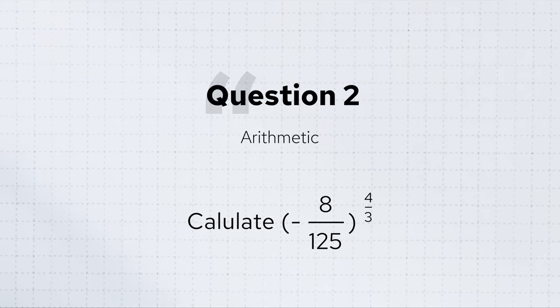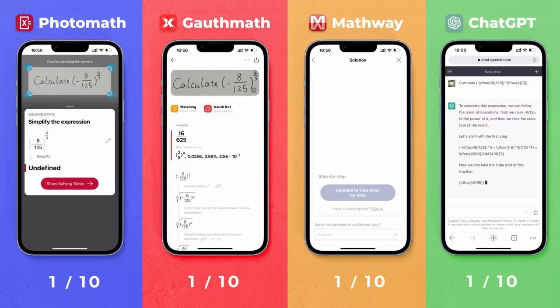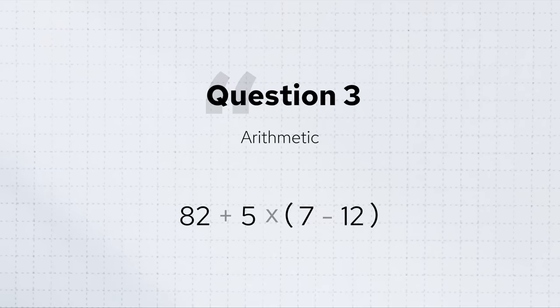A typical equation problem. They all get it right. A slightly challenging arithmetic problem. Only Photomath gets it wrong.